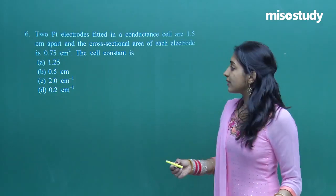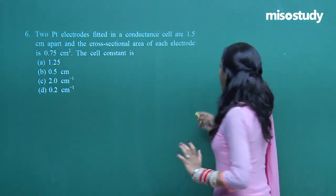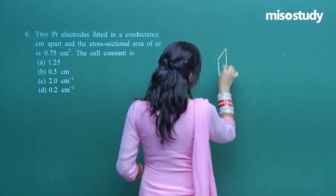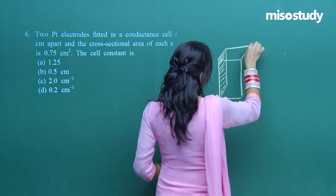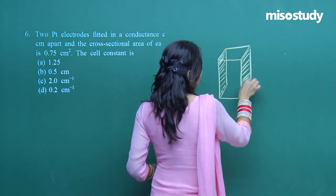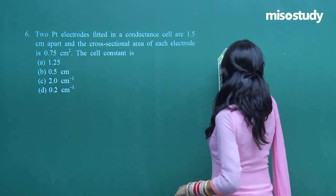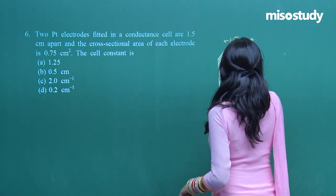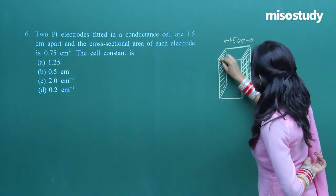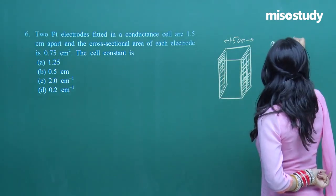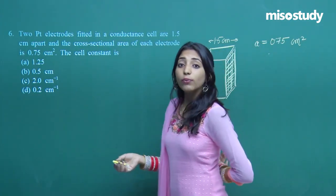Question six: two platinum electrodes are fitted in a conductance cell. They are 1.5 cm apart, and the cross-sectional area of each electrode is 0.75 cm². We need to find the value of the cell constant.